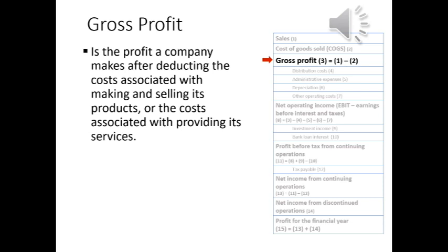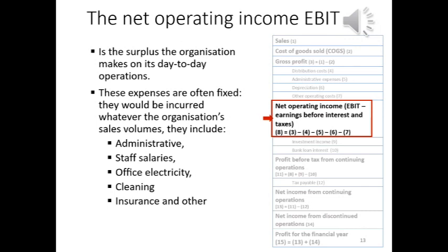Gross profit is calculated as: sales minus cost of goods sold equals gross profit. EBIT — earnings before interest and taxes — is the surplus the organization makes on its day-to-day operations. It takes into account both the direct expenses incurred when making sales and the more general operating expenses needed to run a business. These expenses are often fixed — they would be incurred whatever the organization's sales volumes — and include administrative and sales staff salaries, office electricity, cleaning, and insurance. The formula is: gross profit minus distribution costs minus administration expenses minus depreciation minus other operating costs equals net operating income, known as EBIT.